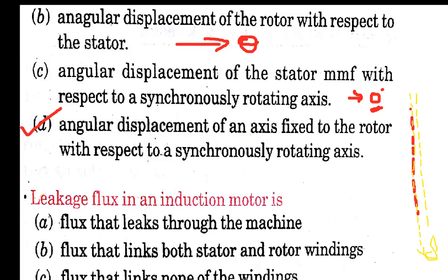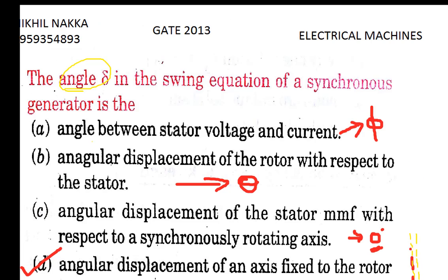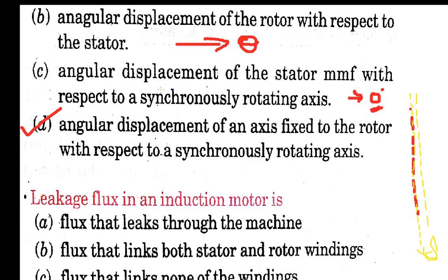So angle Delta corresponds to option D: the angular displacement of the axis fixed to the rotor with respect to the synchronously rotating axis. This angle comes into existence whenever the machine is subjected to some disturbance, like an increase in load.